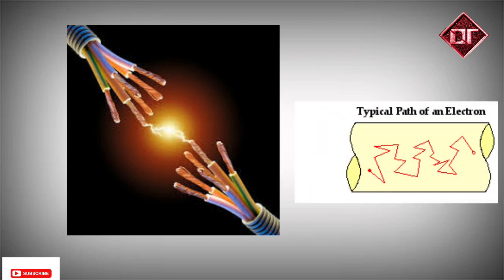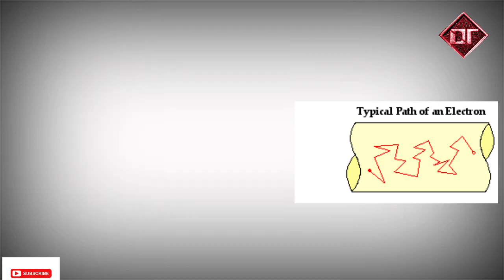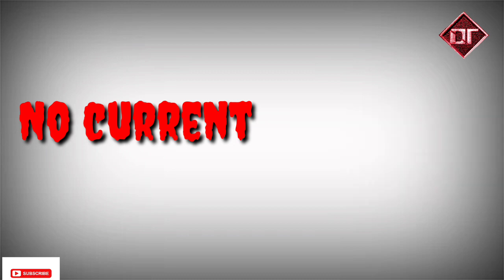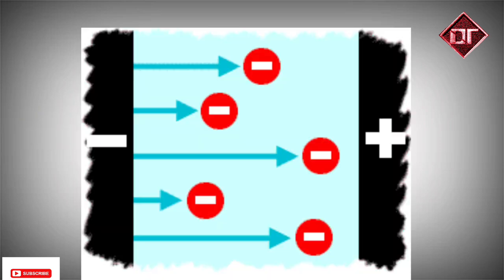So the net movement of the freely charged particles in any particular direction is zero. This is why the conductor doesn't have any current flow. If we want current to flow in a conductor, then we need to move the charges in a specific direction.